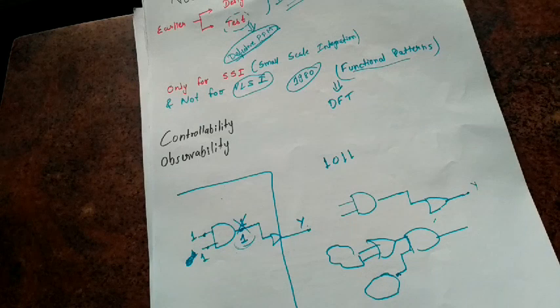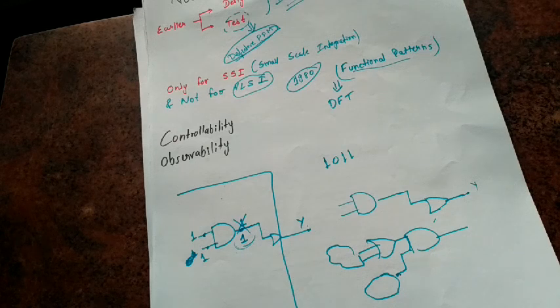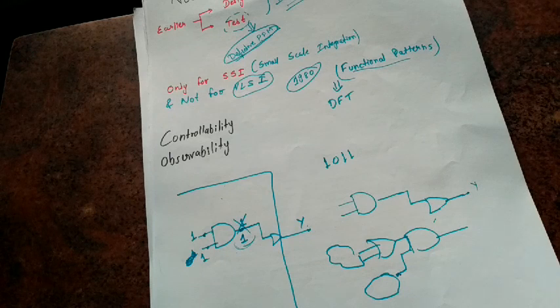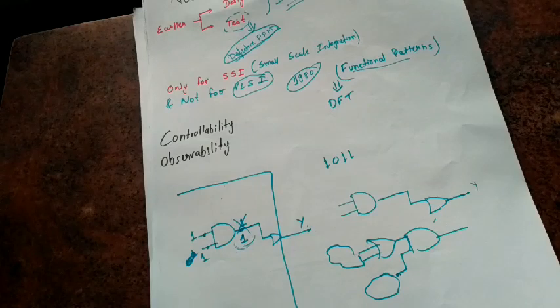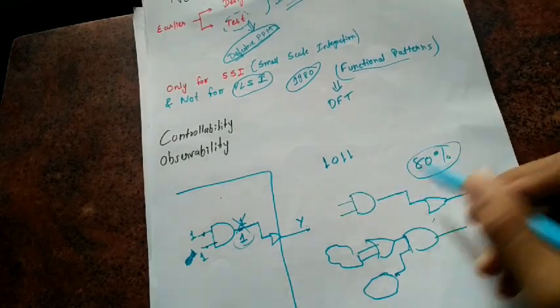So for that some functional patterns were developed and the patterns were given and they are given in such a way that we can control and observe each and every node of the complex circuit. So these functional patterns are being navigated and what happens, a fault simulation or fault grading tool, this is one simulation tool, was used to quantify the effectiveness of this functional patterns. And if the applied functional patterns did not reach the target fault, then what we will do? We will add some extra functional patterns also. But unfortunately this approach also has some limitation and the limitation is that it can't cover the fault coverage beyond 80%. So this approach was also failed.